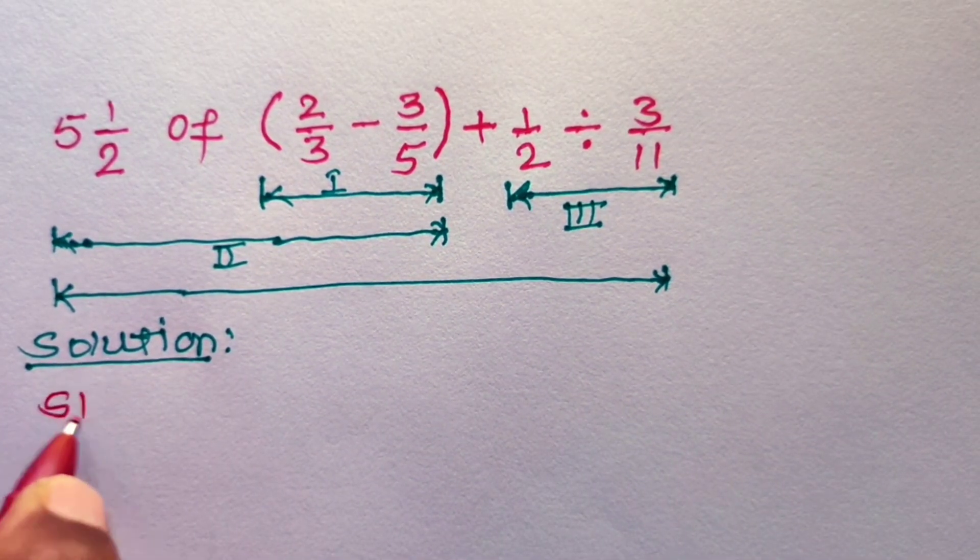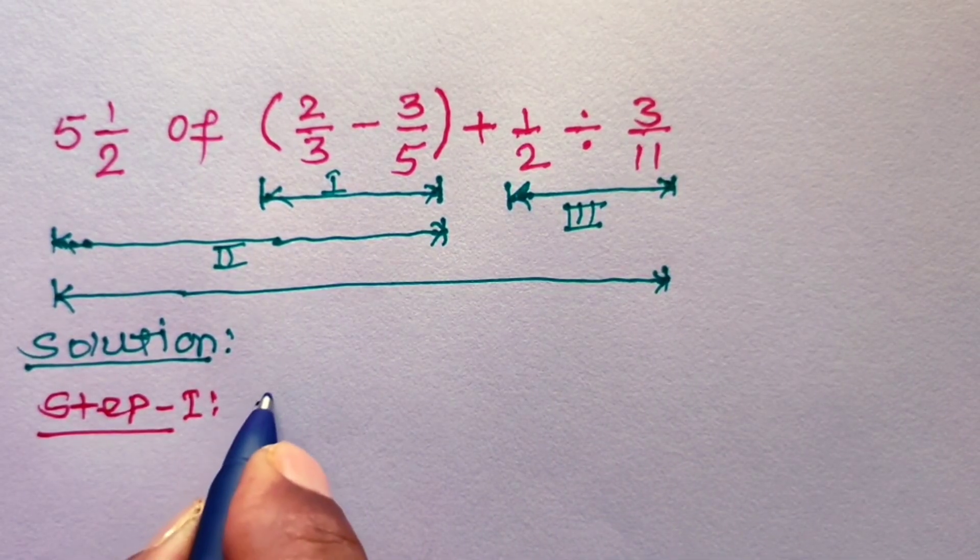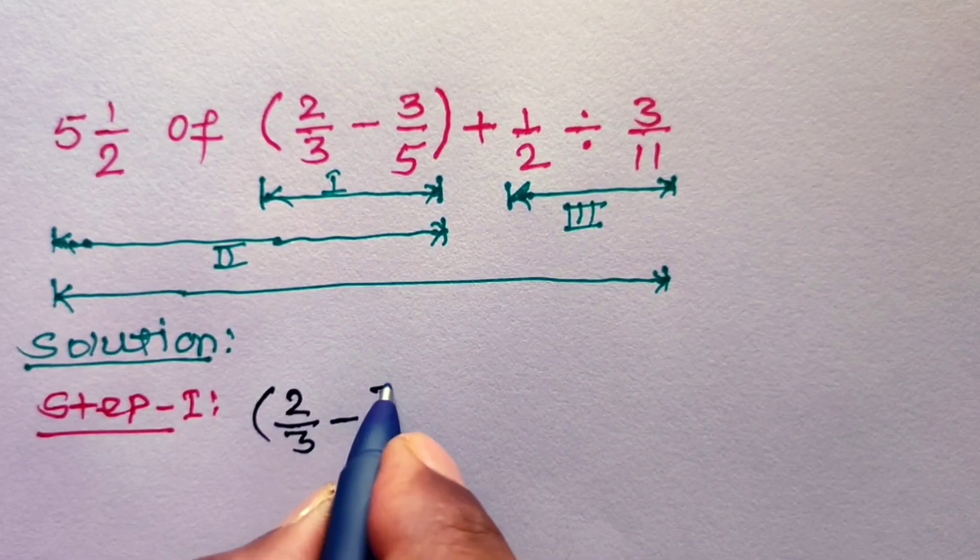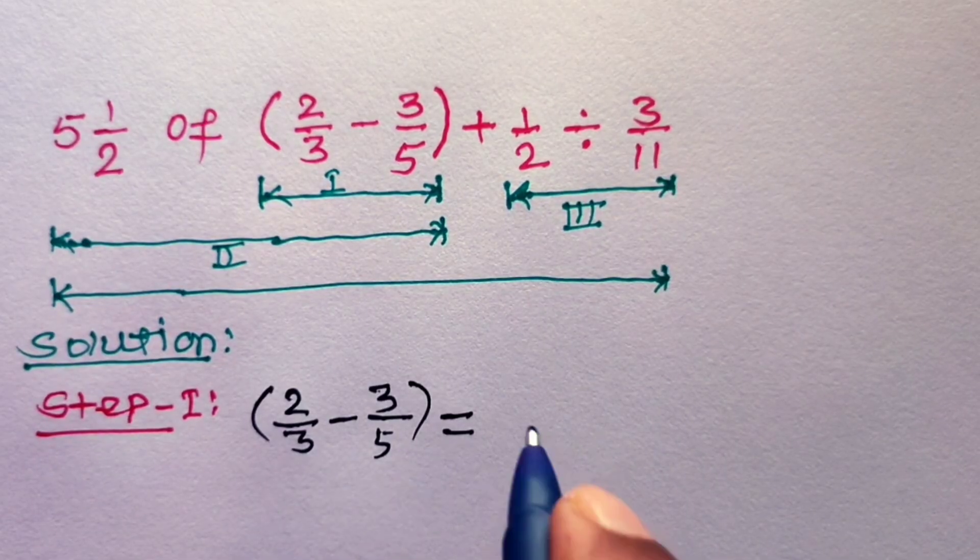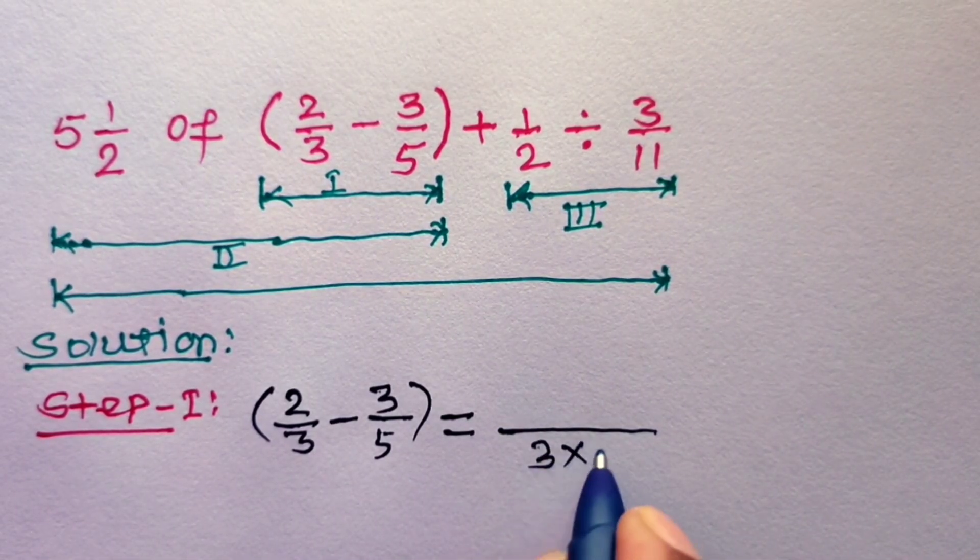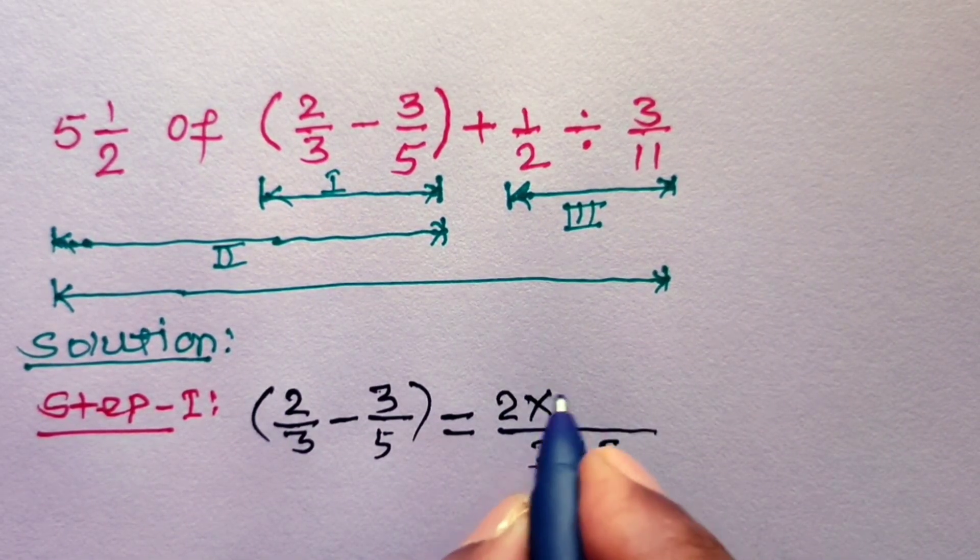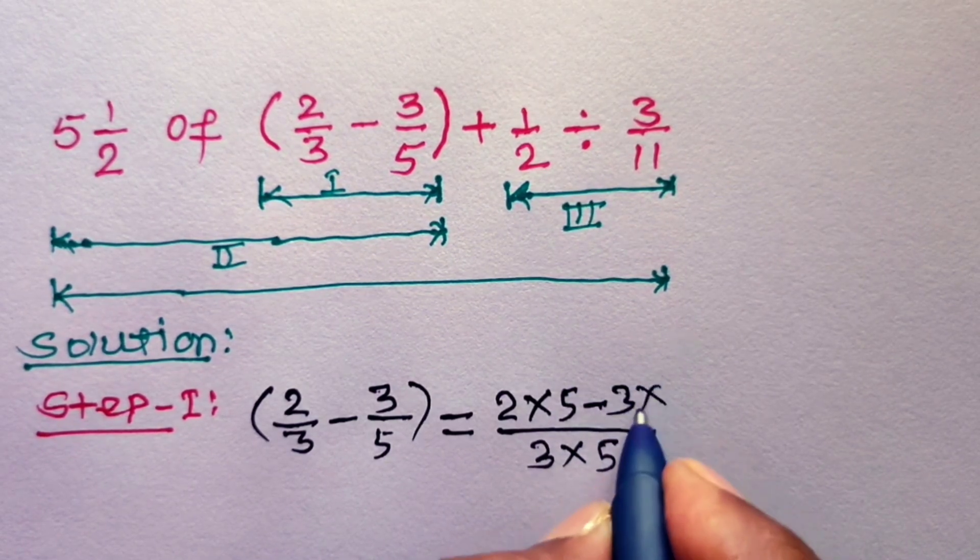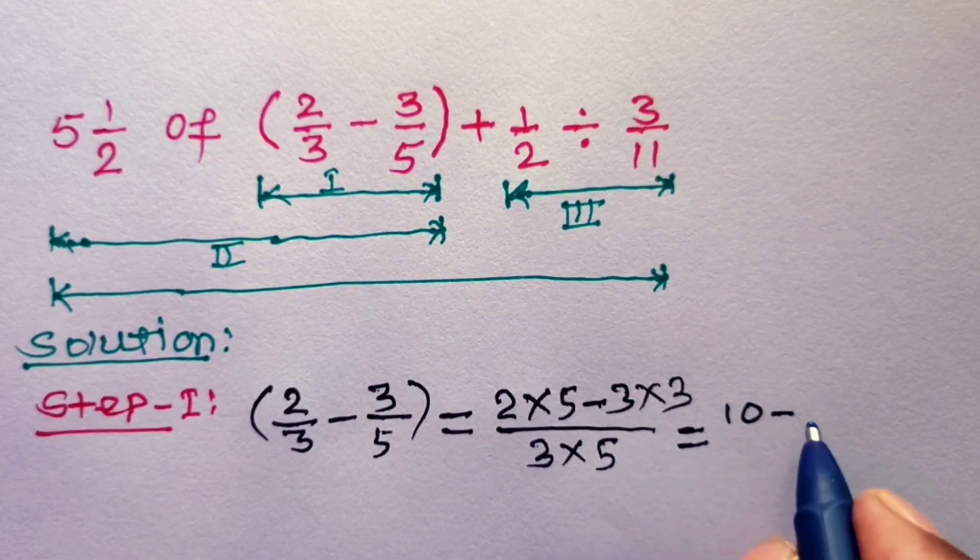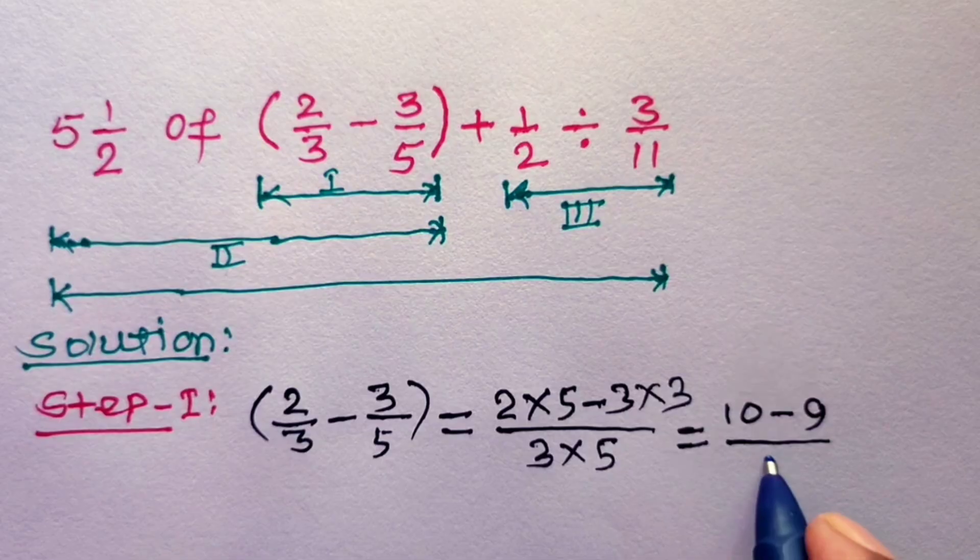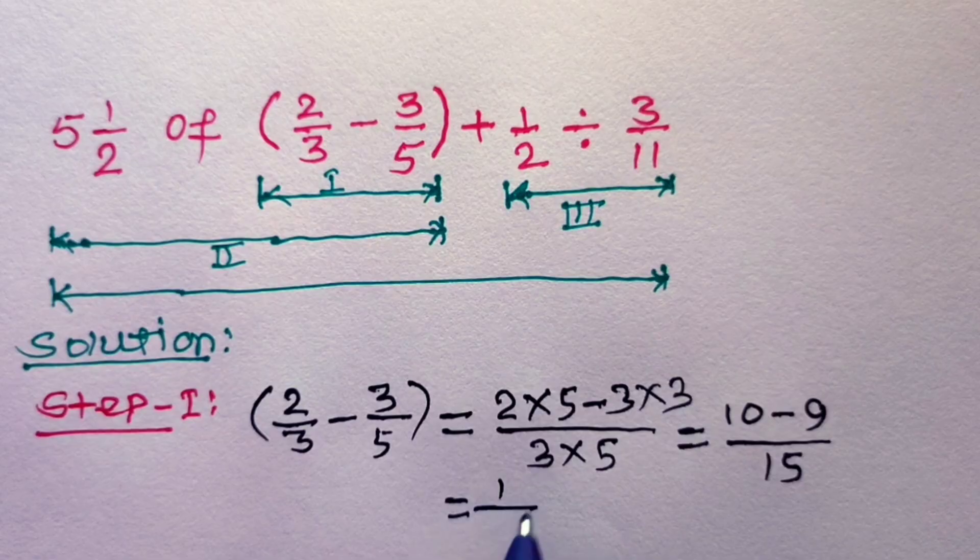Step number 1, value of the bracket 2/3 minus 3/5. Here, LCM of 3 and 5 is 3 into 5. So multiply 2 by 5. In numerator we will get 2 into 5 minus 3 into 3. This is equal to 2 into 5 is 10, minus 3 into 3 is 9, over 3 into 5, 15. So this is equal to 10 minus 9 is 1 over 15.